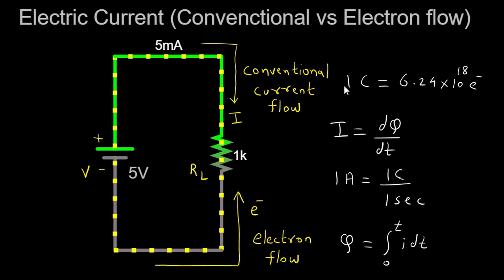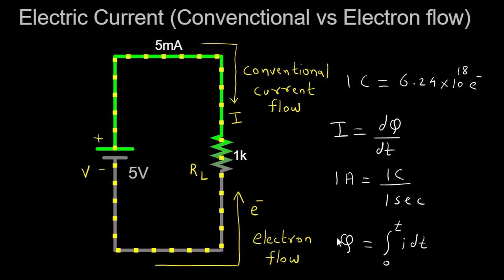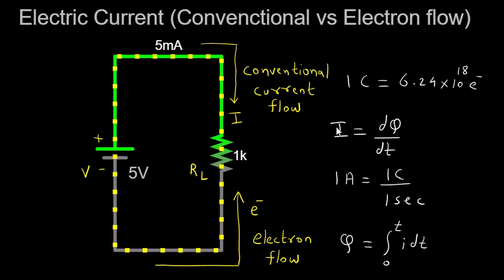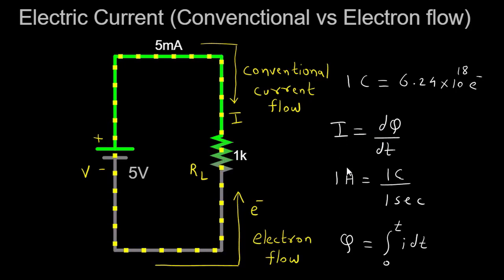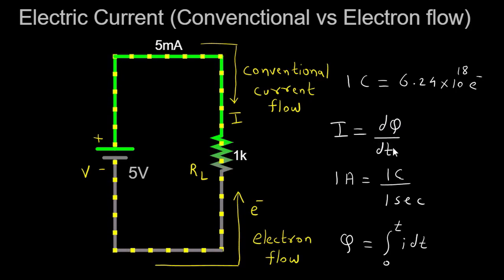Charge, denoted by the symbol Q, is the fundamental property of matter responsible for electrical interactions. It is measured in coulombs (C). Current, denoted by the symbol I, is the rate at which charge flows through a conductor and is measured in amperes (A). The relationship between charge and current is given by the equation I = dq/dt, where dq represents a small amount of charge and dt represents a small amount of time.